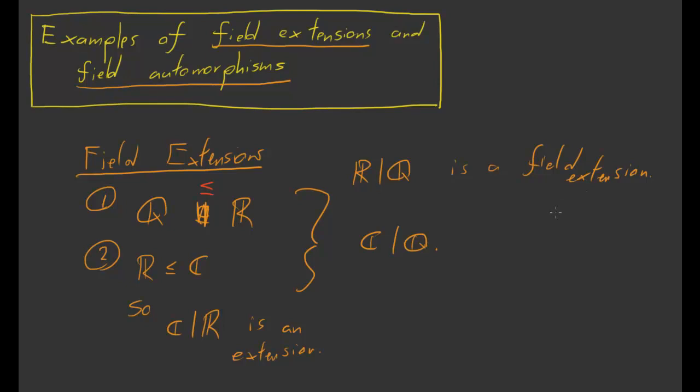Maybe I'll write that down. So if I have fields K1 over K0 and K2 over K1, then I also have K2 over K0. So those are two, or I guess three, examples of field extensions.